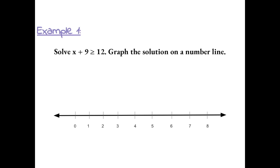We solve these inequalities the same way that we solve equations, by using inverse operations. I want to get x by itself, so I'm going to do the inverse of add 9, and subtract 9 from both sides. These equal 0 and can be cancelled out, so we're left with x. We bring down the same symbol: x is greater than or equal to 3.